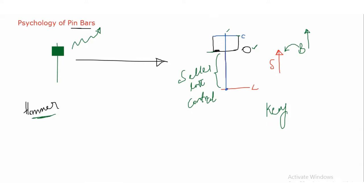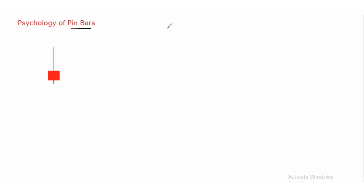Now moving to another candlestick pattern: the shooting star. How will it look? There will be a small body with a long wick at the upside and a small wick at the downside. This is also a pin bar candle which plays a major role in the market.